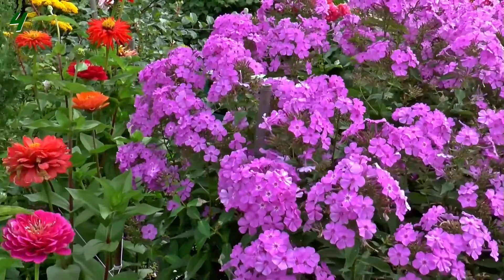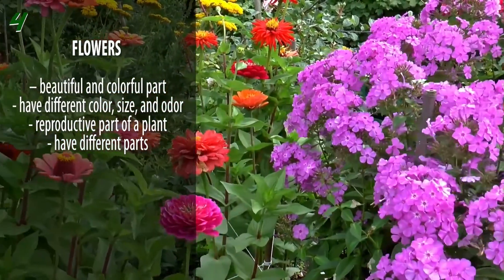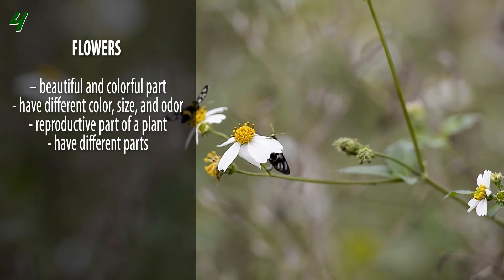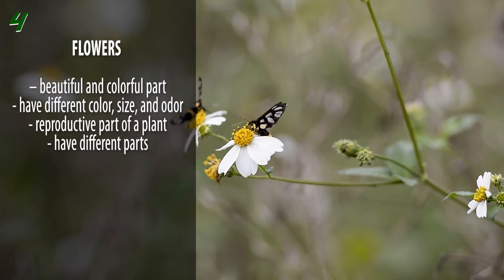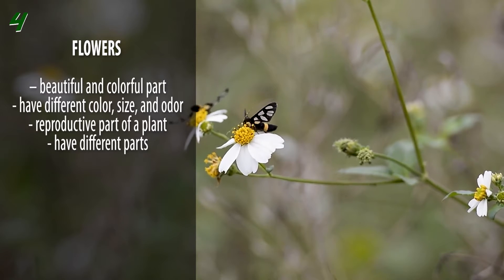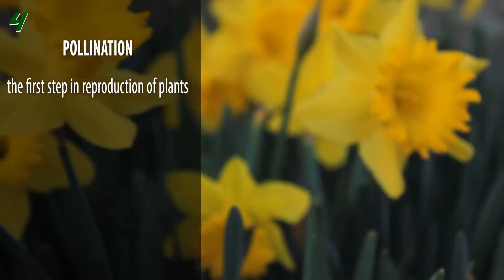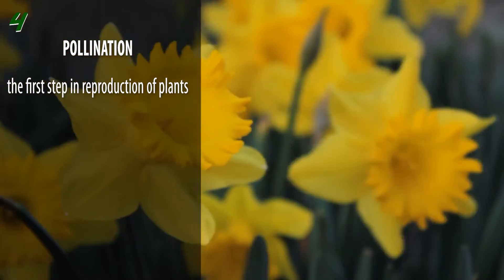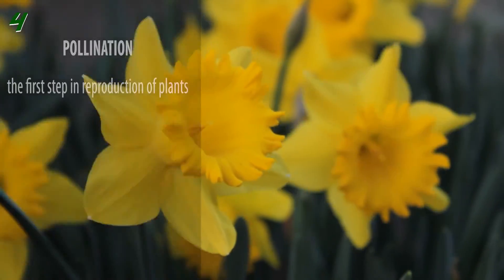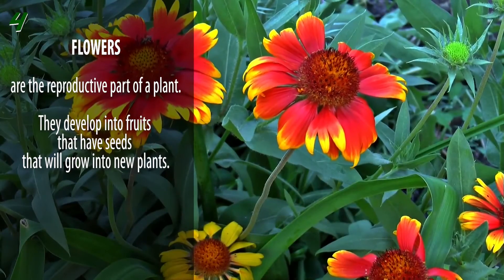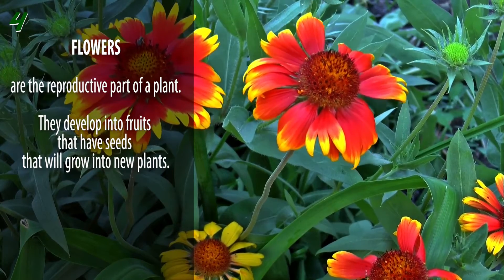What makes the plant beautiful? The flowers are the most beautiful and colorful part of a plant. Their various colors and fragrant odor attract insects such as bees and butterflies, which are drawn near to suck the flower's nectar. When they do, the flowers become pollinated. Pollination is the first step in reproduction of plants. This happens when the pollen grains transfer from the stamen to the pistil of a flower. Flowers are the reproductive part of a plant.